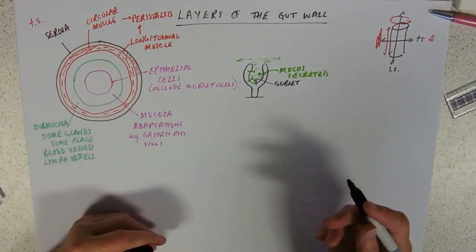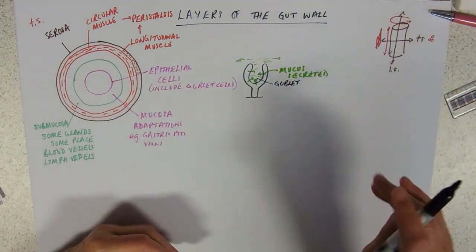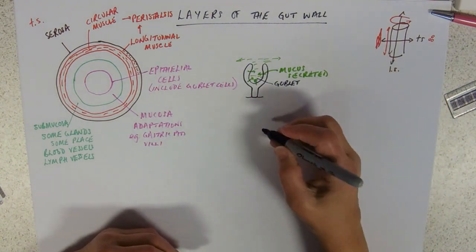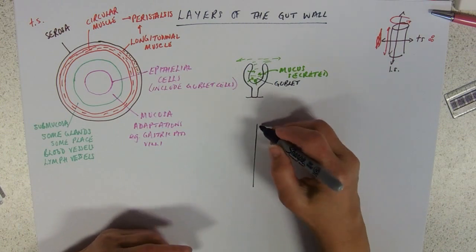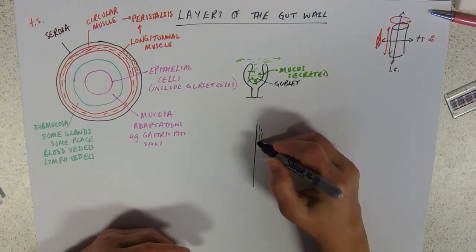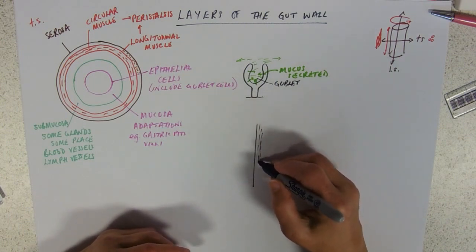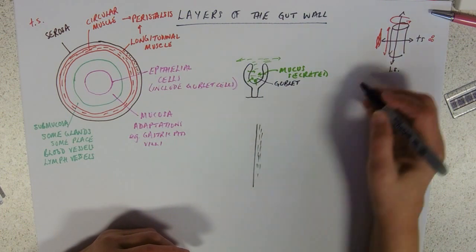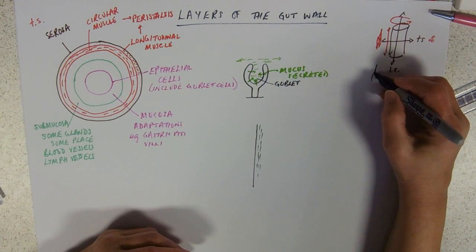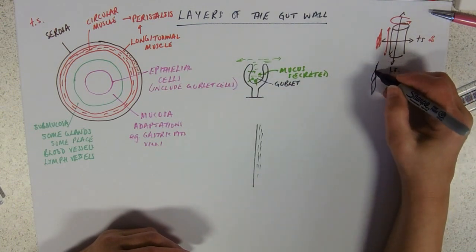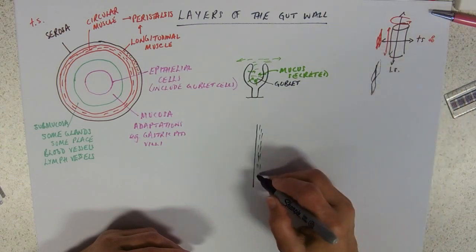If you are looking at a longitudinal section of the gut, so you've cut it down and you're kind of looking across, you're going to get the serosa still, but now your longitudinal muscle is going to look like long fibers because the cells, those smooth muscle cells that are all lovely leaf shape, are all arranged and they're going to look like little stripes like that.